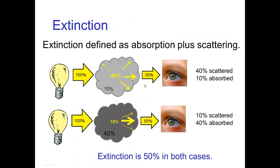We can talk about the combined effect of just how much the transmitted light is reduced due to the combination of absorption and scattering, and this is called extinction. So if we have 40% of the light scattered and 10% of it absorbed, then we have 50% extinction.